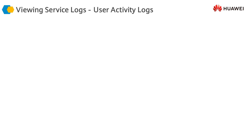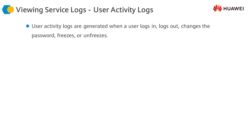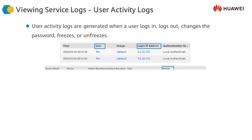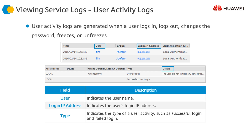User activity logs are another type of service log. They are generated when any user logs in, logs out, changes the password, or freezes or unfreezes. By viewing user activity logs, administrators can check users' online records such as login time, online duration, freeze duration, login IP address, and current user activities. These logs help to identify abnormal user login. The user field indicates the username, and the type field indicates the type of user activity, such as successful or failed login attempts.